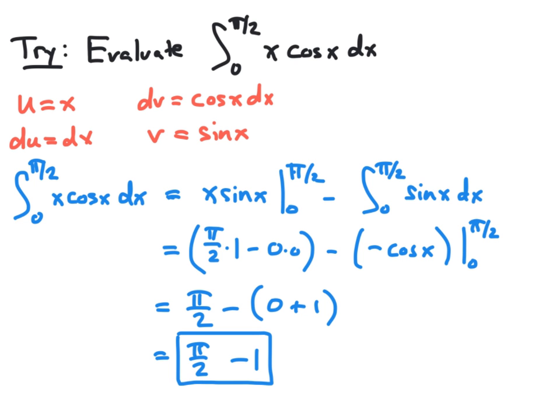For this one, we can choose u equal to x and dv equal to cosine x dx. And therefore, du equals dx and v equals sine x.